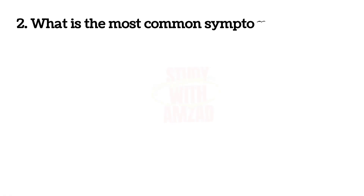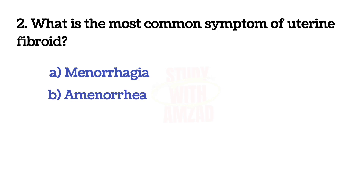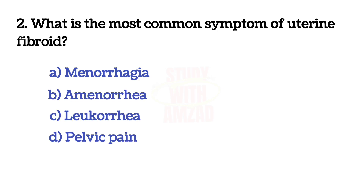What is the most common symptom of uterine fibroid? The correct answer is A: Menorrhagia.